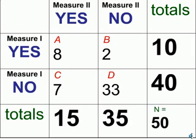Let's suppose that we had data that looked something like this. 10 people passed the test the first time. 15 people passed the test the second time. 8 people passed the test both times.